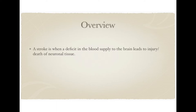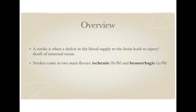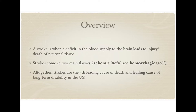So to begin with, what is a stroke? A stroke is whenever a deficit in the blood supply to the brain leads to injury or death of neuronal tissue. We traditionally divide strokes into two different types: ischemic, which account for the vast majority — 80% of strokes — and hemorrhagic strokes. Hemorrhagic strokes are associated with bleeding into the brain parenchyma, whereas ischemic strokes are not. Strokes are the fifth leading cause of death and leading cause of long-term disability in the U.S., according to the American Heart Association, so early recognition and treatment is vital.